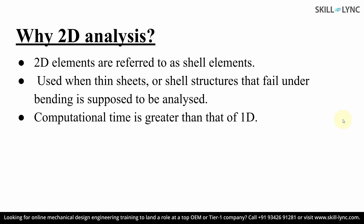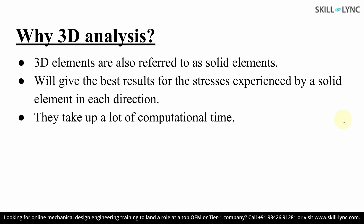2D elements are basically referred to as shell elements, and these shell elements are provided with a thickness to represent the model. They are predominantly used when we have thin sheets and shell structures, and we can accurately derive bending stress using them. This type of element helps get accurate results with less computational effort than going for a 3D analysis. If you have obtained all the required results from 1D and 2D but still want to understand the stress produced on the whole model, you go for a 3D analysis, which is computationally heavier and uses solid elements to represent the models.